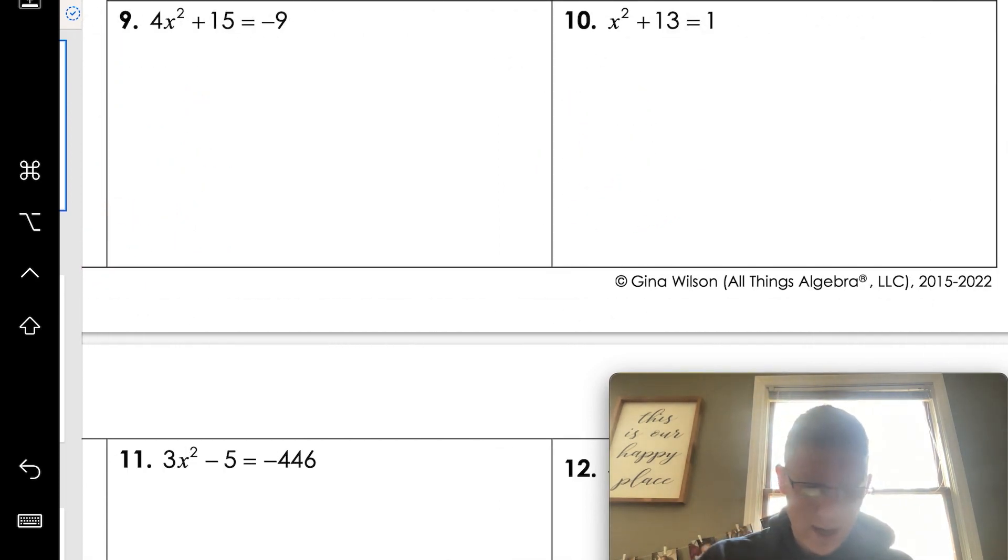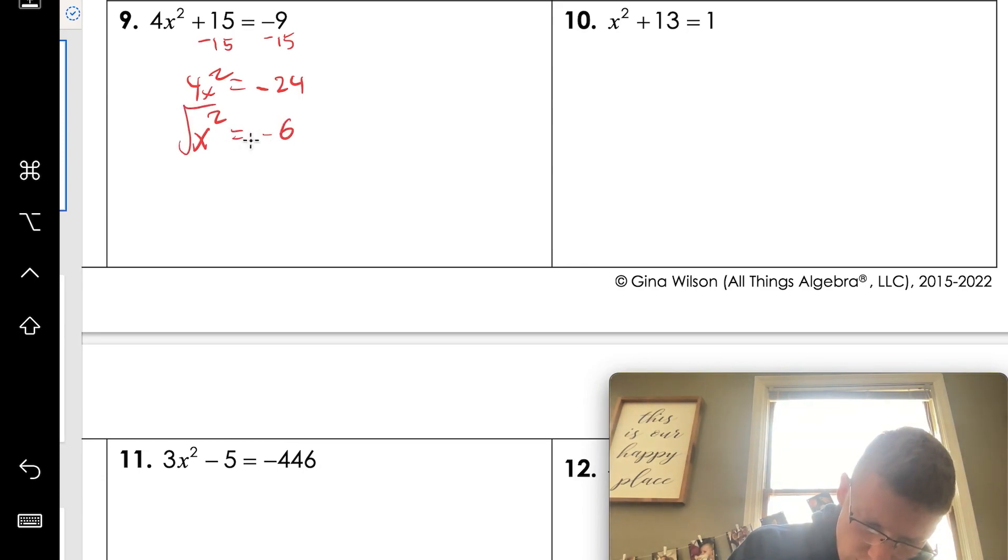Okay, nine and 10. Here we come. So we're going to subtract 15 from both sides. Negative nine minus 15. Minus 24 equals four x squared. 24 divided by four. x squared equals negative six. Square root both sides. We've got x equals.